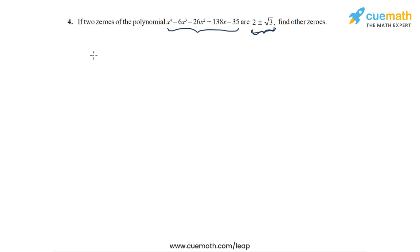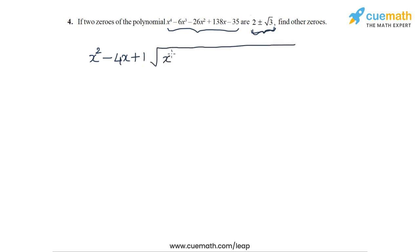Let's write the divisor Q(x) first, which is x squared minus 4x plus 1. And then we will write the dividend, P(x): x to the 4 minus 6x cubed minus 26x squared plus 138x minus 35.